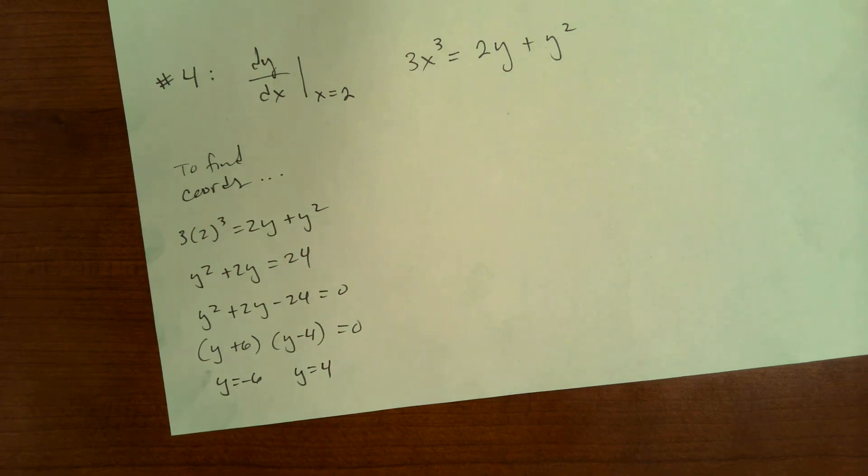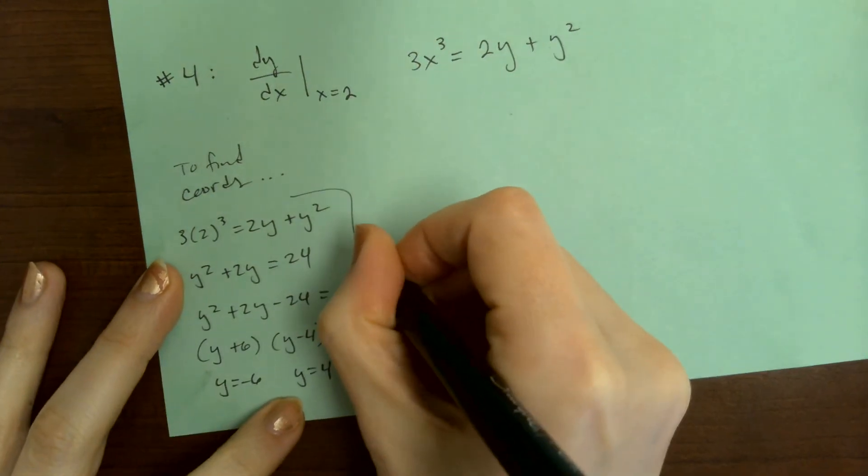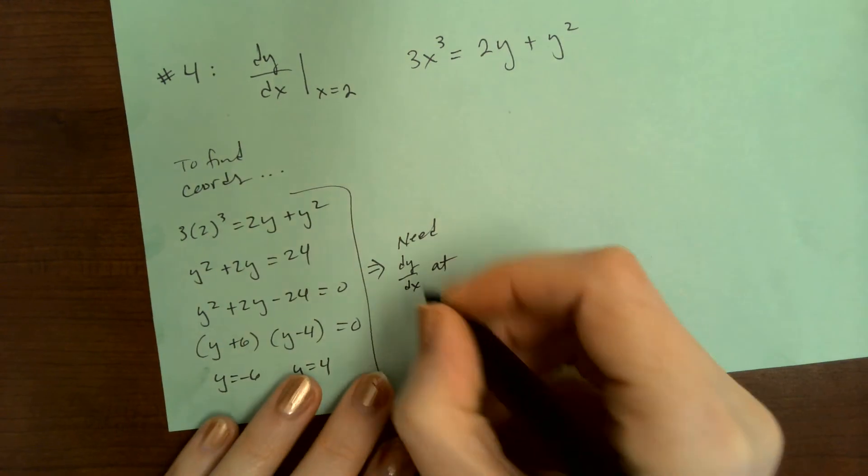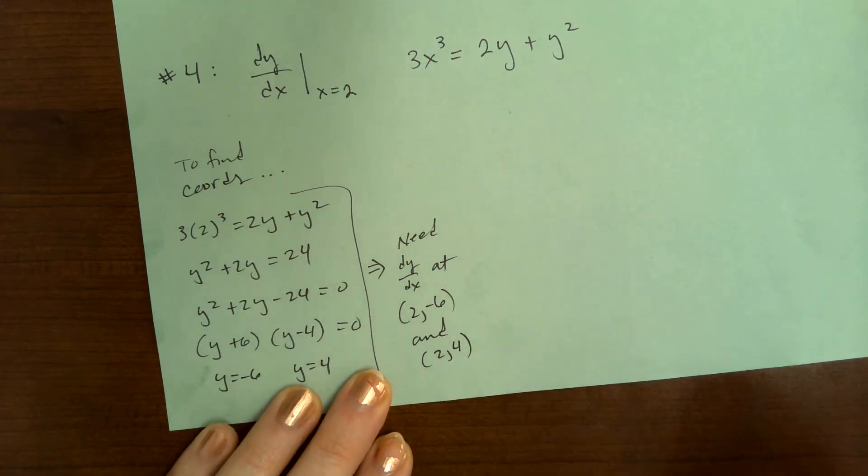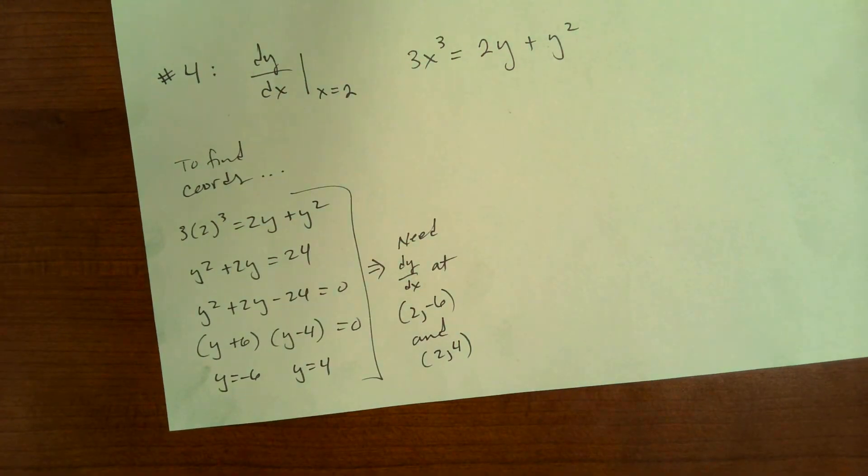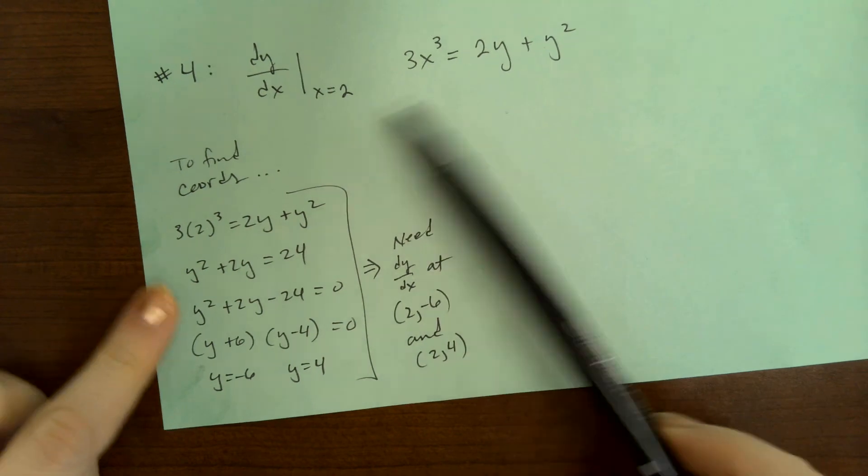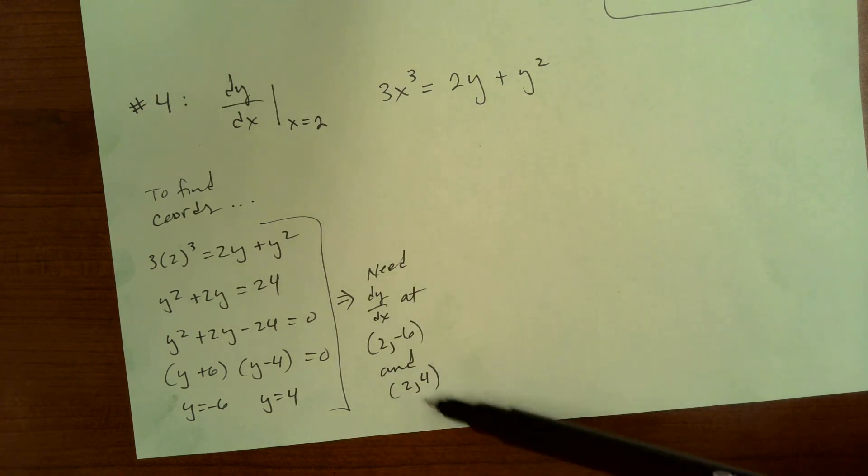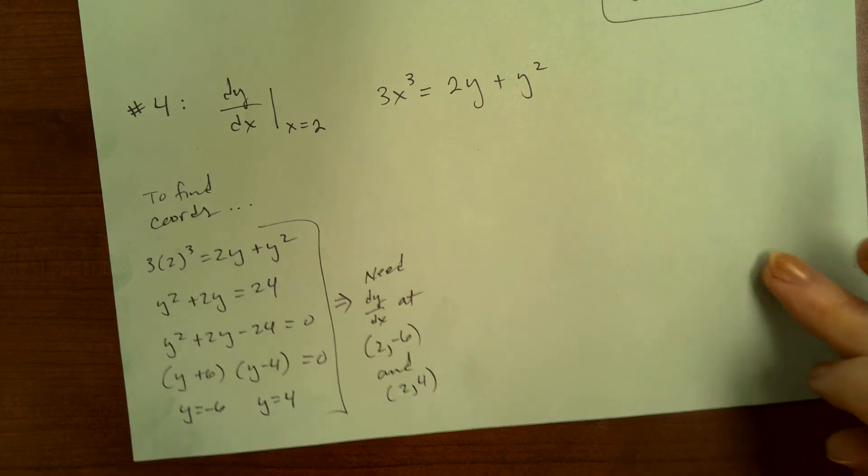Oh, okay. Just like the graph. So what we just figured out here is that, okay, need dy/dx at 2, negative 6 and 2, 4. So if you're only given one of the coordinates, you need to plug that given coordinate into the original equation before having taken any derivatives and then figuring out the second coordinate. And sometimes you're going to have two points. Sometimes we'll just have one point, but sometimes you're going to have two points. So we're going to end up with two slopes.